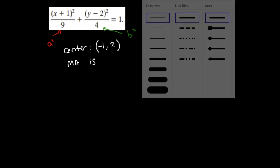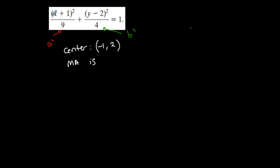So being that the largest denominator is underneath x, and that's my a squared, the major axis is horizontal.